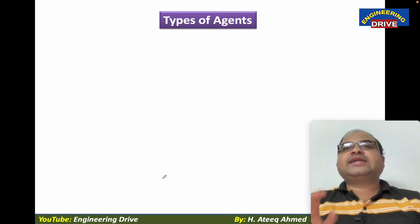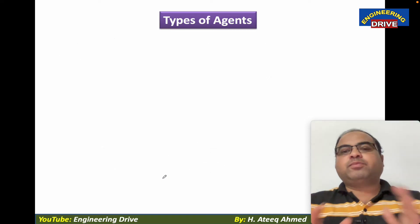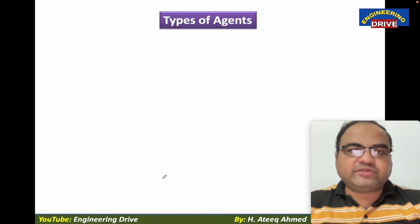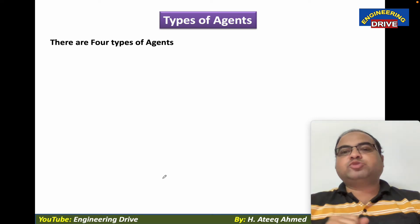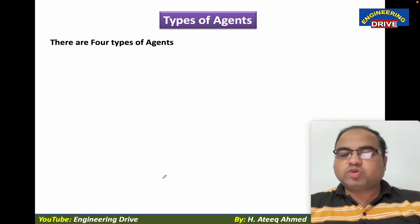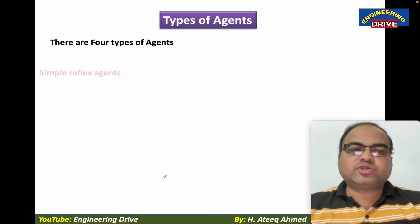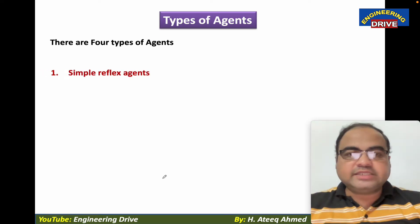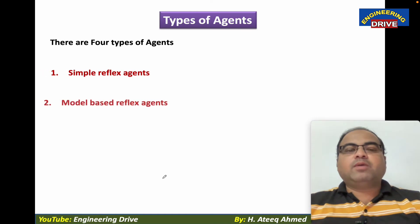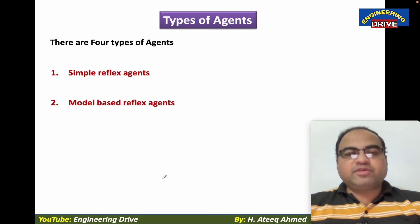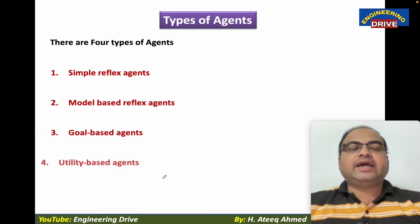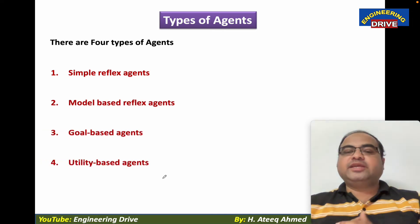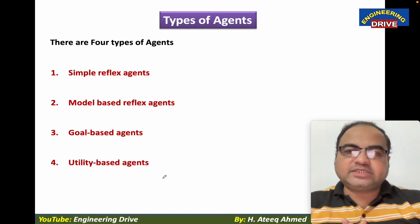Now, what are the types of agents in artificial intelligence? There are four types of agents: simple reflex agents, model-based reflex agents, goal-based agents, and utility-based agents. These are the four types of agents and they are very important.